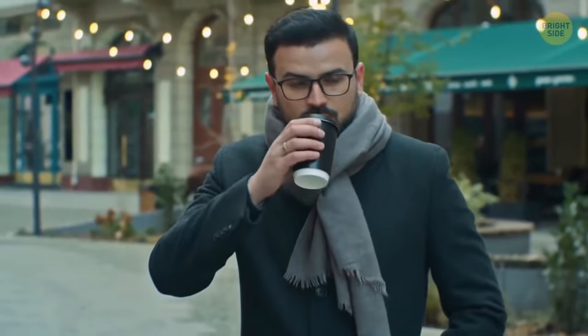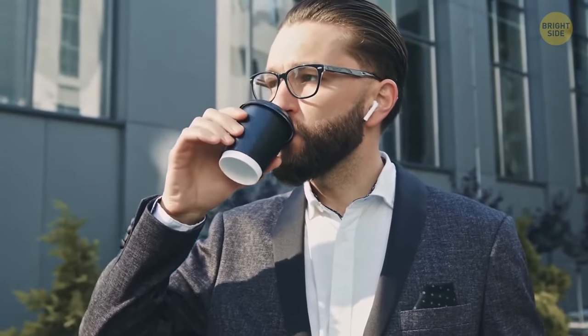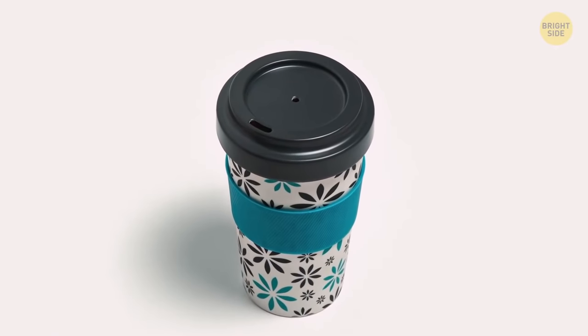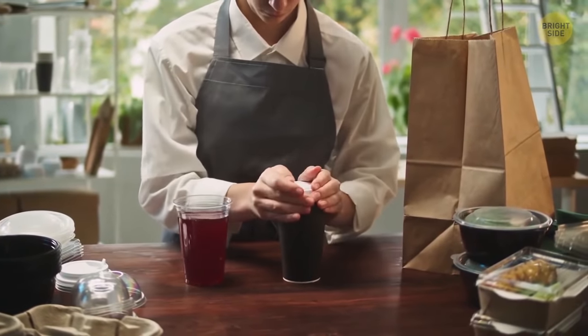When you take a sip from a coffee cup with a lid, it decreases air pressure inside the cup so air tries to get in. The tiny hole on the lid allows air to enter that way, so liquid can smoothly pour out the main hole.